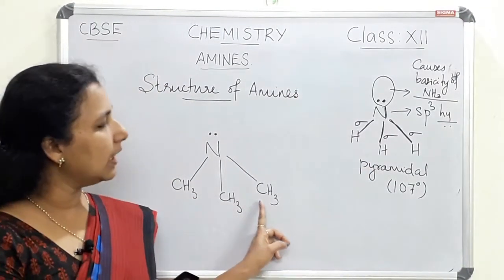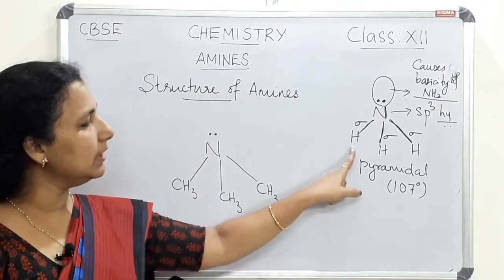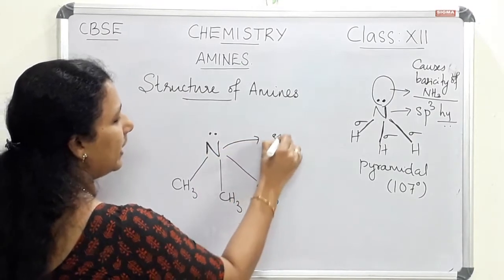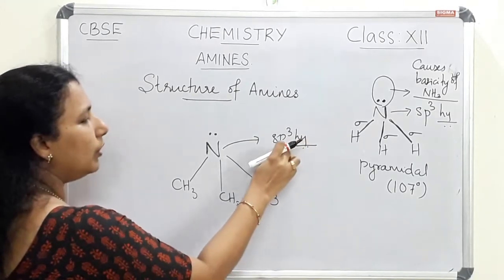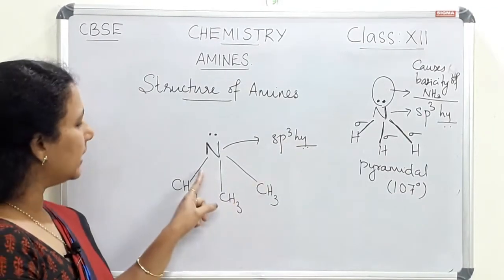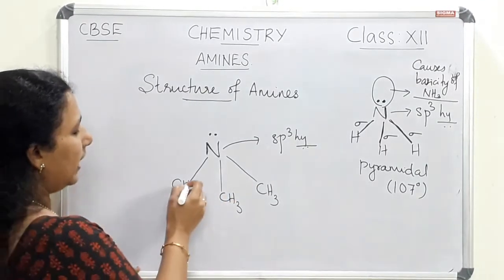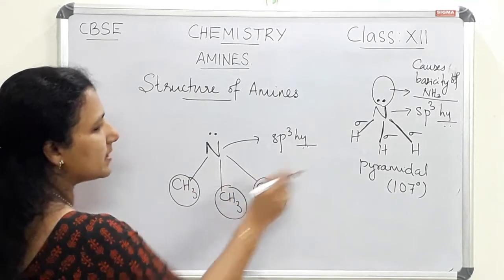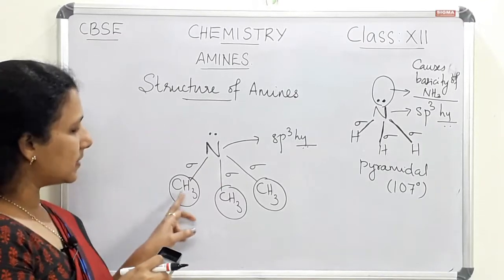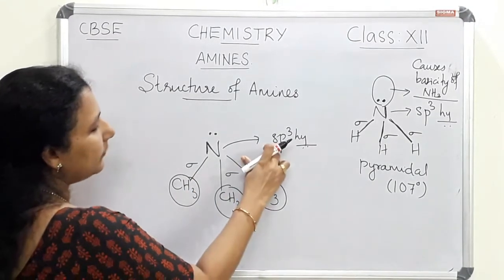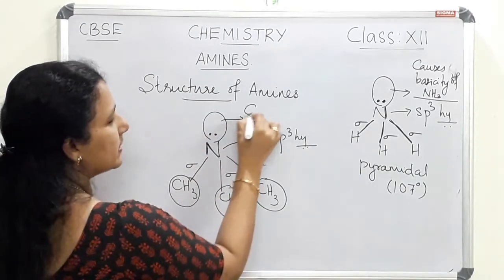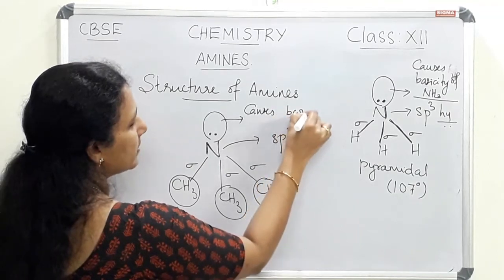Amines are alkyl derivatives or aryl derivatives of ammonia, so similar to ammonia we can explain the structure of amines. In amines, nitrogen is also sp3 hybridized. One s orbital and three p orbitals hybridize together to form four hybrid orbitals. Three hybrid orbitals are connected to three alkyl groups instead of hydrogen, forming sigma bonds, and the fourth sp3 hybrid orbital contains a lone pair of electrons that causes the basicity of amines.